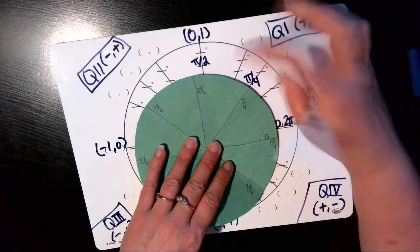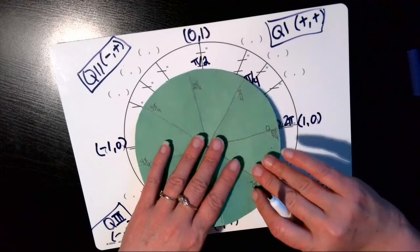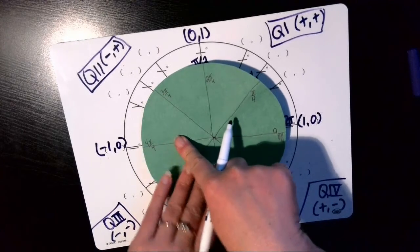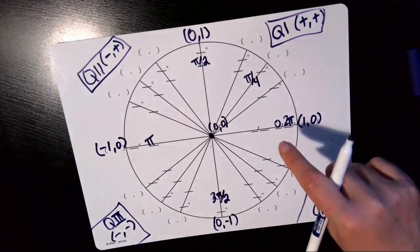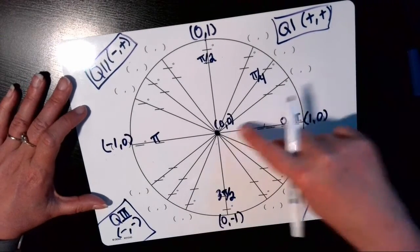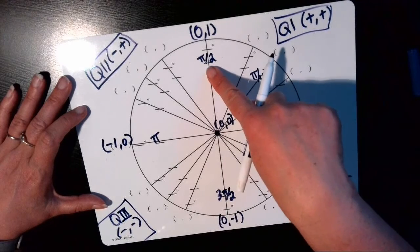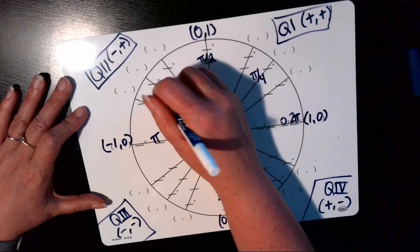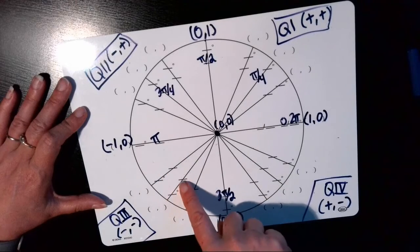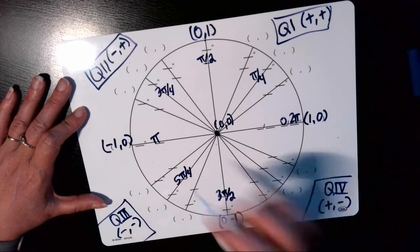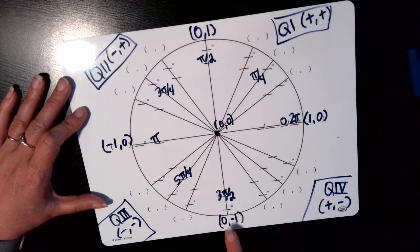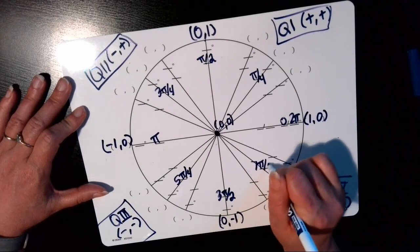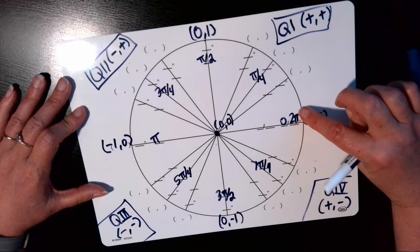Then 2·(π/4) reduces to π/2. Continuing: 3π/4, then 4·(π/4) = π. Counting all the way around by π/4s: 0, π/4, 2π/4 = π/2, 3π/4, 4π/4 = π, 5π/4, 6π/4 = 3π/2, 7π/4, and 8·(π/4) = 2π, which brings us back all the way around.